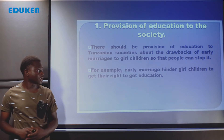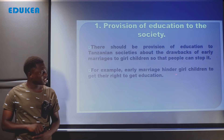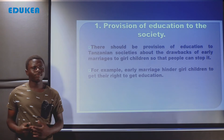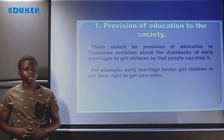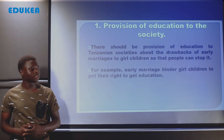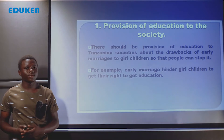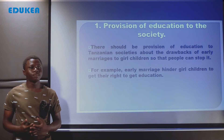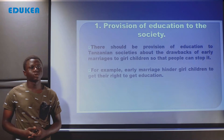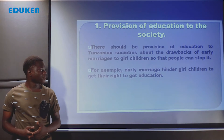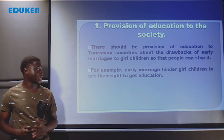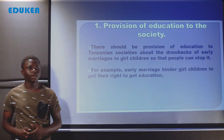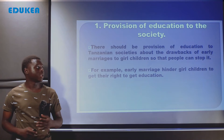For example, early marriage hinders girl children from getting their right to education. Unakuta mtoto wakike anakosa kwenda shuleni kwa ajili ya kupata elimu, lakini baba anamua kumzoesha mtoto waketu labda apate something — inapelekea mtoto wakike kukosa elimu. It is where we are going to end up this problem of early marriages in our societies.